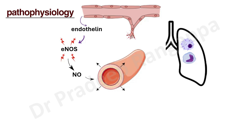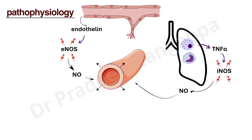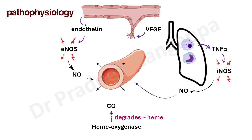Another pathway involves inflammatory cells — macrophages and monocytes — present in the lungs, which lead to production of tumor necrosis factor alpha. This again activates inducible nitric oxide synthase, producing nitric oxide and causing vasodilation. Additionally, there is angiogenesis driven by increased vascular endothelial growth factor, and heme oxygenase degrades heme to produce carbon monoxide, which also causes vasodilation.